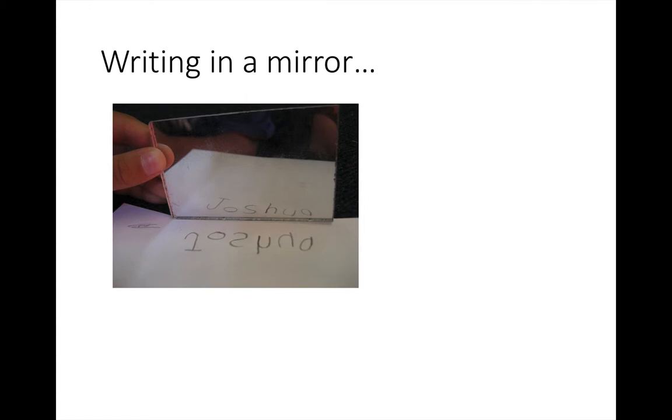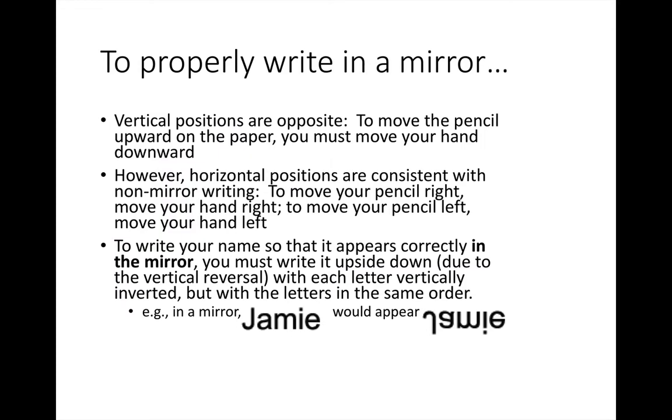Well, most of you probably realize that we sort of have been trained to do it one way and then when you do it in a mirror, everything is backwards and everything goes the wrong way. And the question is what if I had put up this slide first and told you that really to properly write in a mirror, you need to realize that vertical positions are opposite but horizontal positions are consistent. So to write your name, if my name is Jamie, then my name would appear as it does there in the mirror. Do you think this would have made it any easier?